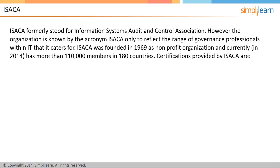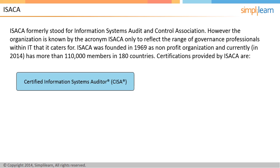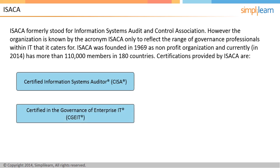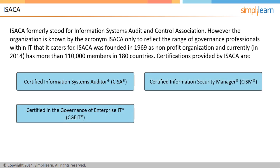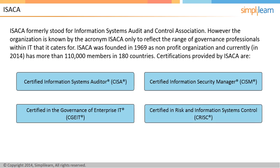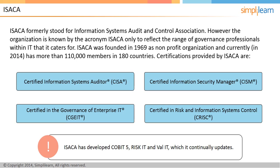Members of ISACA get subsidized rates in pursuing their certifications, which include Certified Information Systems Auditor, CISA; Certified in the Governance of Enterprise IT, CGEIT; Certified Information Security Manager, CISM; and Certified in Risk and Information Systems Control, CRISC. Over the years, ISACA has also developed COBIT 5, Risk IT, and Val IT, which it continually updates.